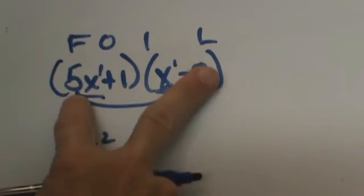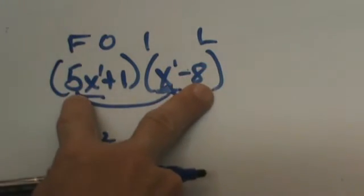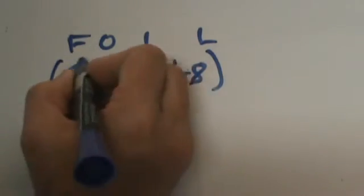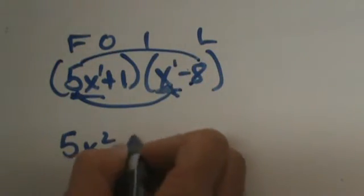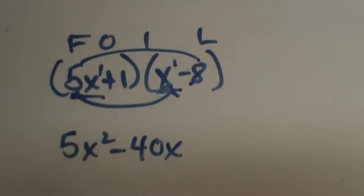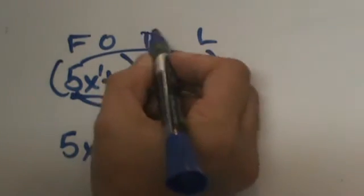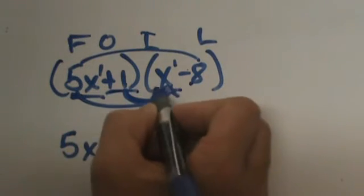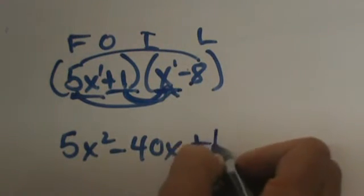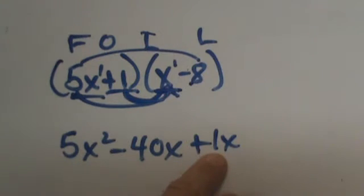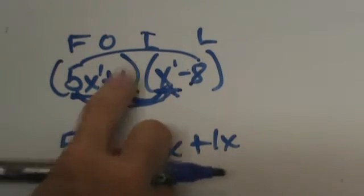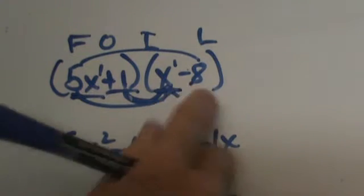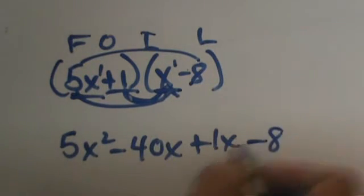The O in FOIL stands for Outer: 5x times negative 8 gives negative 40x. The I stands for Inner terms: positive 1 times x gives plus x (writing the 1 there to represent it). Then the L, Last: positive 1 times negative 8 is negative 8.